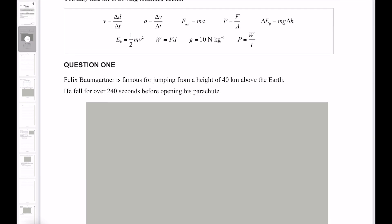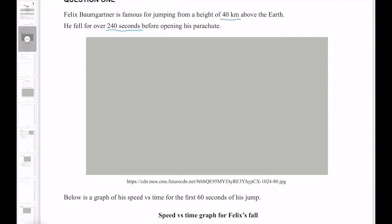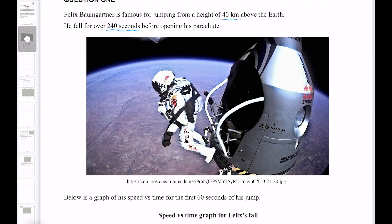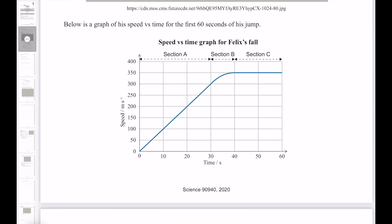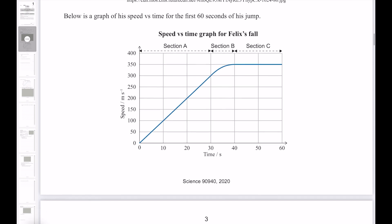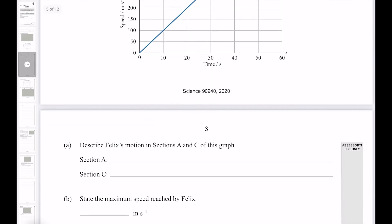Felix Baumgartner is famous for jumping from a height of 40 kilometers above the earth. He fell for over 240 seconds before opening his parachute. Below is a graph of his speed versus time for the first 60 seconds of his jump. Describe Felix's motion in sections A and C of this graph.